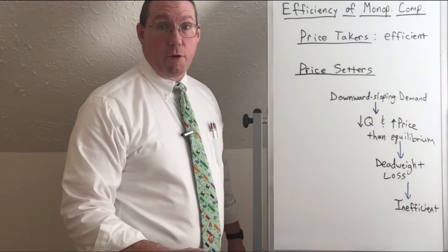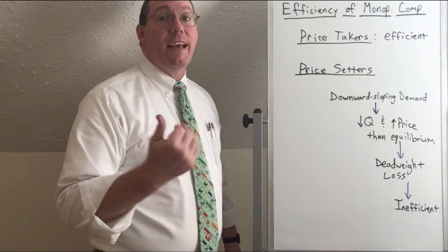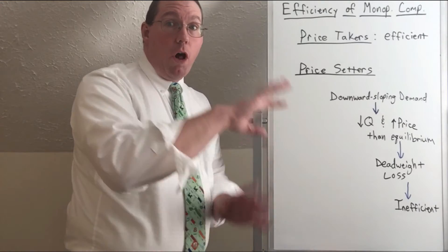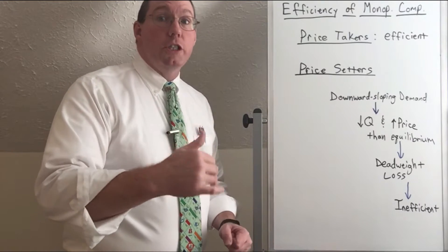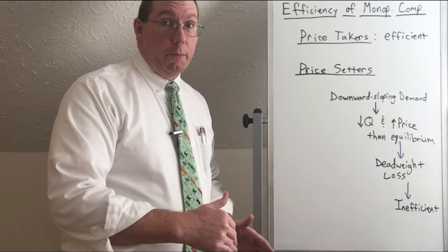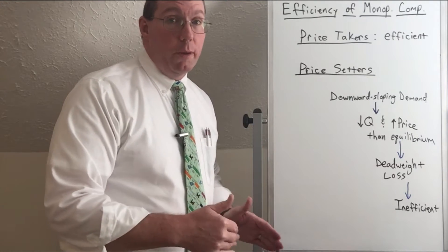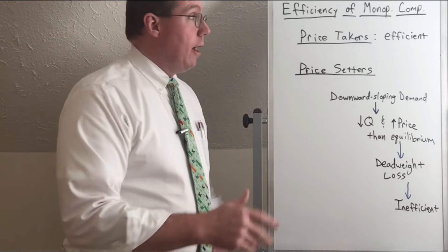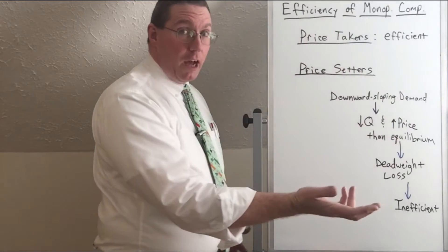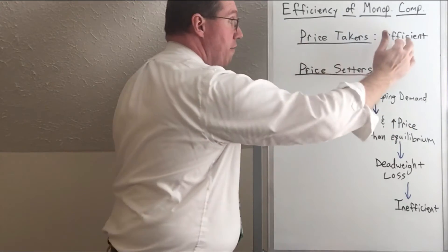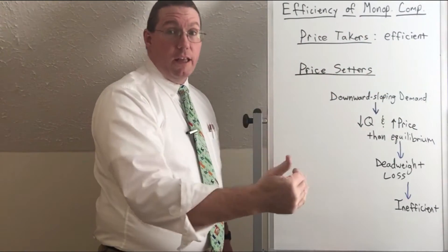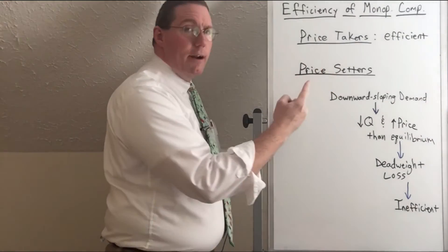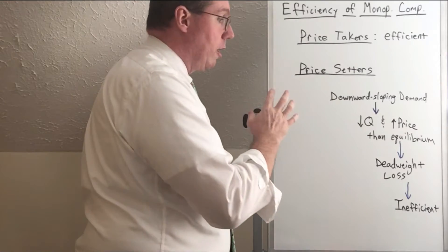The reason price takers are efficient is because they take the price given to them by the overall industry market, which is determined by equilibrium price. When a market is at equilibrium price, there is no dead weight loss, and therefore price takers — like perfect competition — are economically efficient in terms of overall society. But price setters are inefficient.